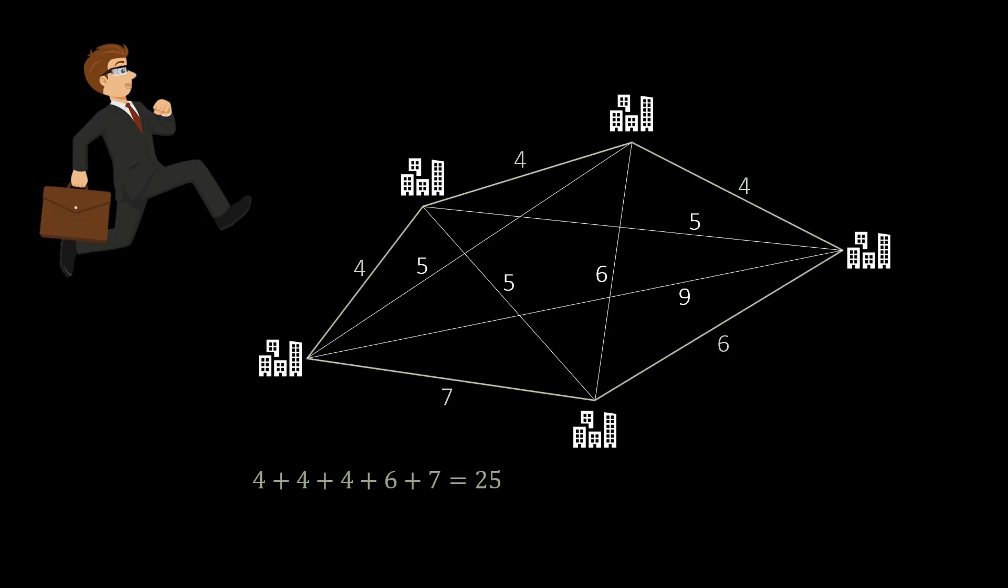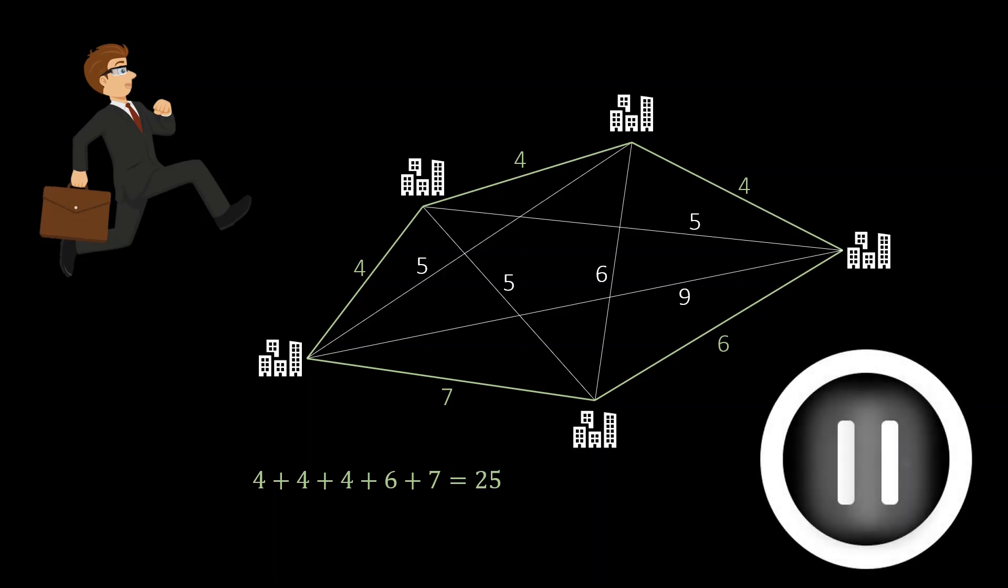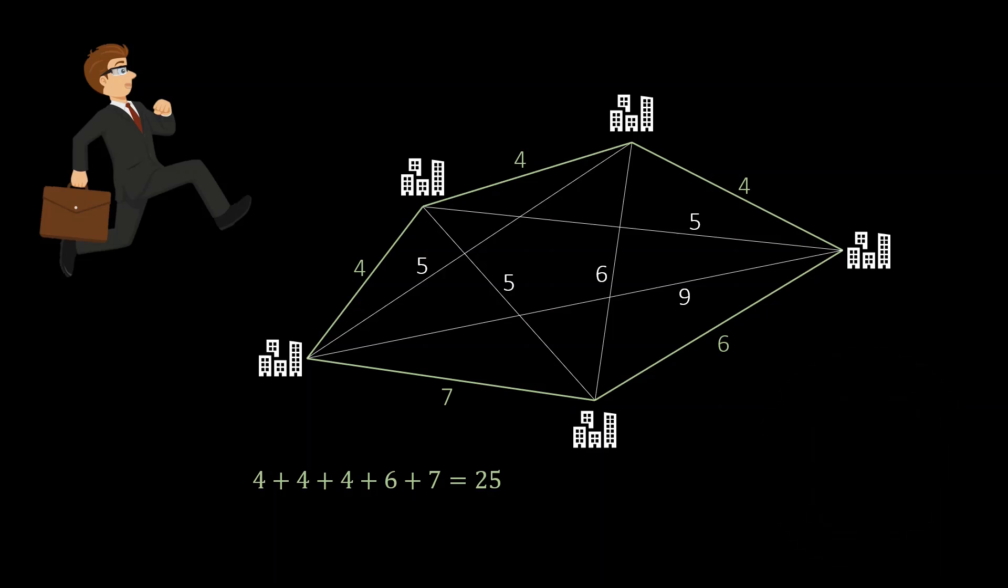One possible tour for the salesperson is shown here in green. It visits every city exactly once. The total length of the tour is 25. Please pause the video to see if you can find a shorter tour. In this example, there is actually a better solution. It's shown here in green and has length 24.